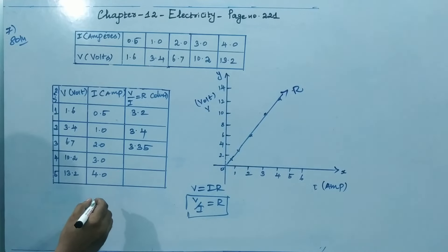Next 10.2 and 3, we'll get 3.4. Same way this is 3.3. So we have 1, 2, 3, 4, 5 resistances. We have to find the mean resistance. So R mean.